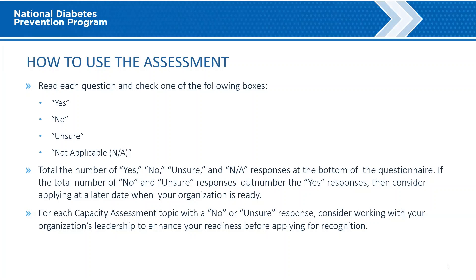Potential organizations are instructed to total the number of Yes, No, Unsure, and NA responses at the bottom of the questionnaire. If the total number of No and Unsure responses outnumber the Yes responses, the organization should wait before applying for CDC recognition. However, organizations should work on all areas without a Yes, since all are important for successfully delivering the program.